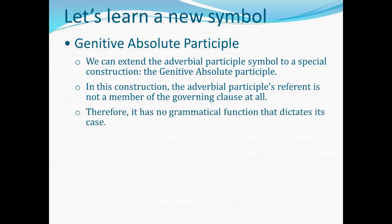Since the participle's referent is not a member of the governing clause at all, it has no grammatical function that dictates its case. In Greek, the way a noun or adjective's case is determined is by its function within its clause. But the referent of the genitive absolute participle has no function within the governing clause — its only function is in relation to the participle. But the referent's gender, number, and case don't depend on the participle; the participle's gender, number, and case depend on the referent. So we have to get the referent into a certain case before we know what case to write the participle in — this is a bit of a dilemma.